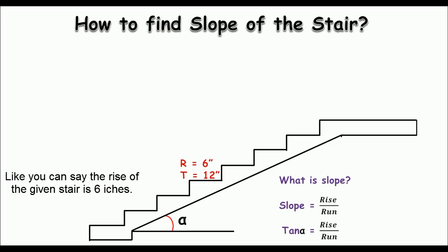Let's suppose if the rise and run of the stair is known, like you can say the rise of the stair is 6 inches and the tread or run is 12 inches. If it's right, the same thing, then I can use of course the tangent of the angle, which is rise over run.